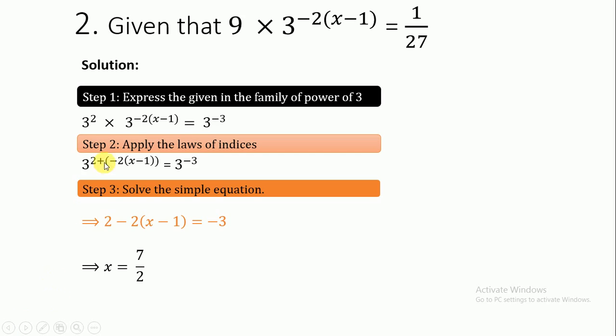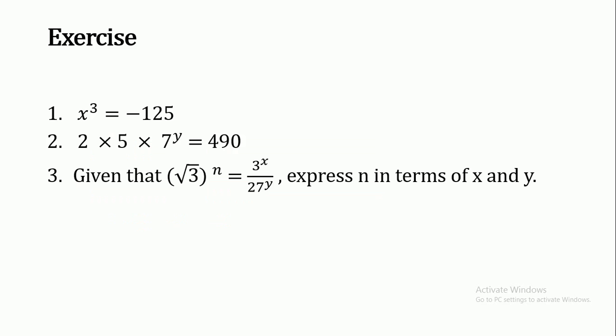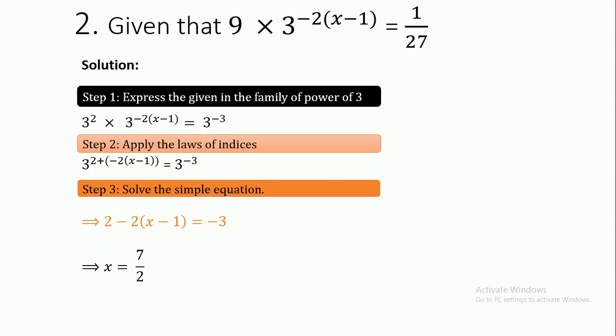Simplifying: 4 - 2x = -3, so 2x = 7, giving x = 7/2. We have come to the end of this video.